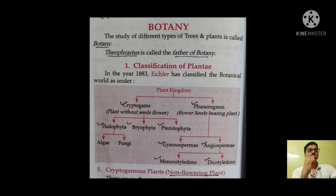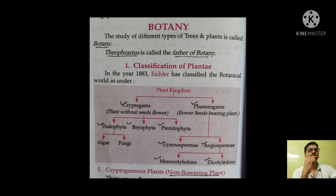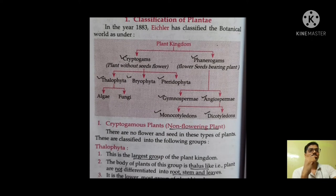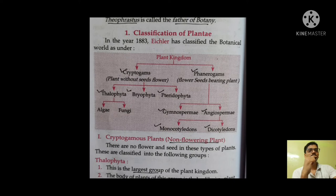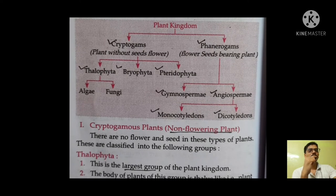The first topic is botany. Botany is related to the study of different types of plants and trees. Theophrastus is called the father of botany. Classification of the plant kingdom was done by Eichler in the year 1883 into cryptogams and phanerogams. Cryptogams are plants without seeds or flowers, and phanerogams are flower- and seed-bearing plants. Cryptogams are further divided into thallophyta, bryophyta, and pteridophyta. Phanerogams are divided into gymnosperm and angiosperm, and angiosperm is further divided on the basis of cotyledons into monocotyledons and dicotyledons.